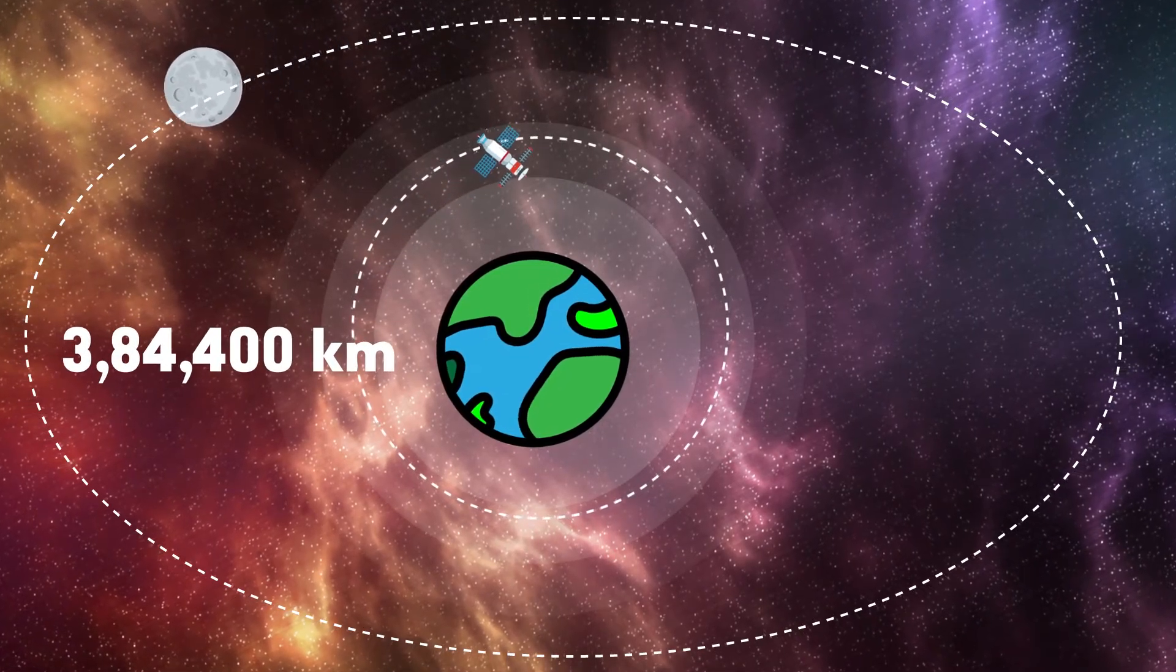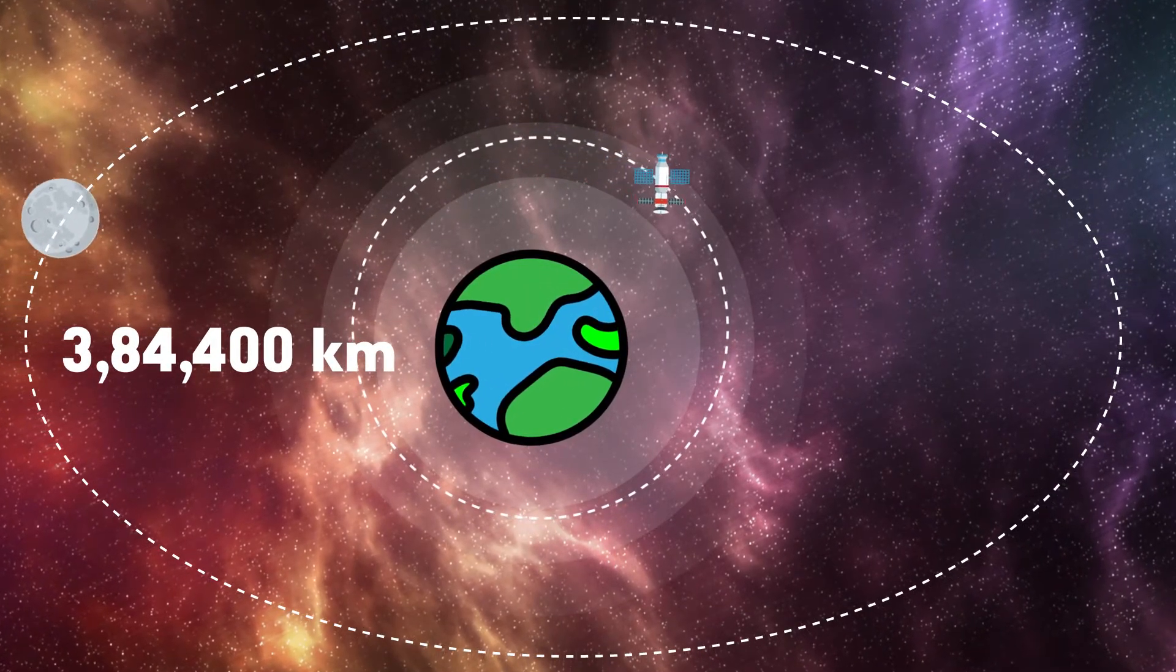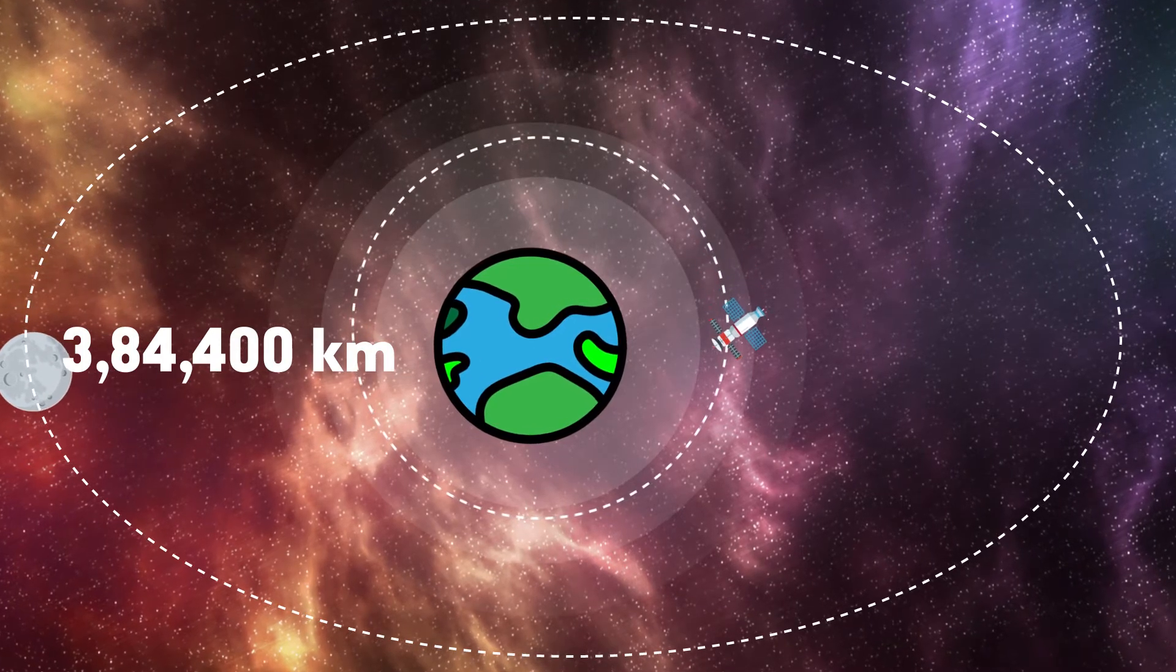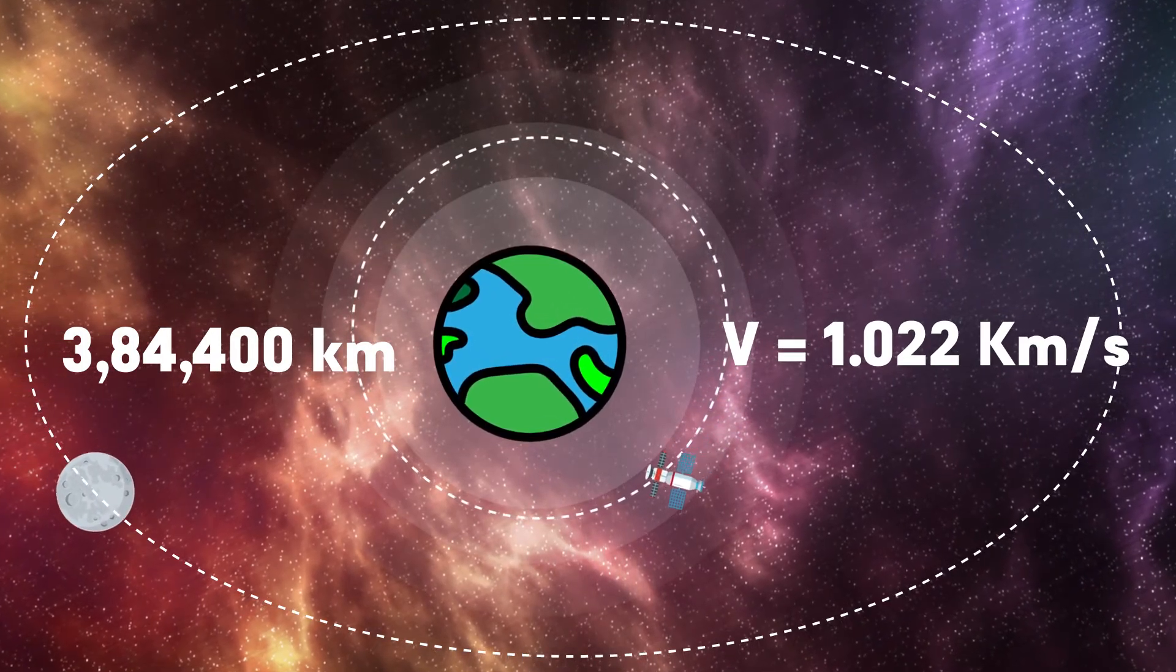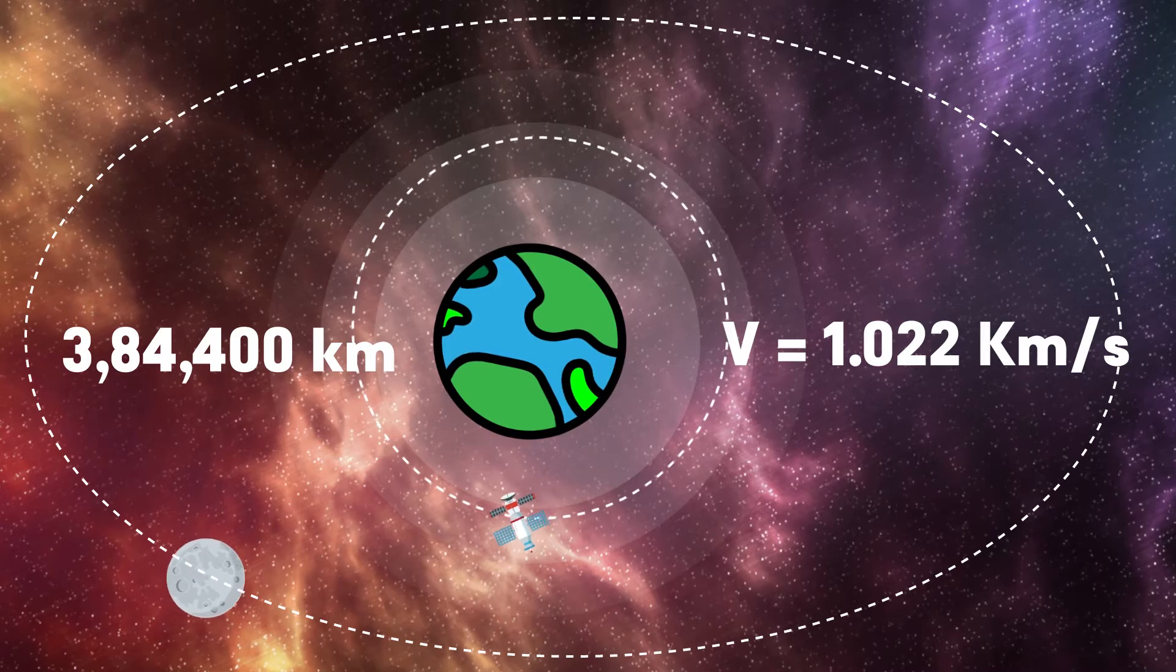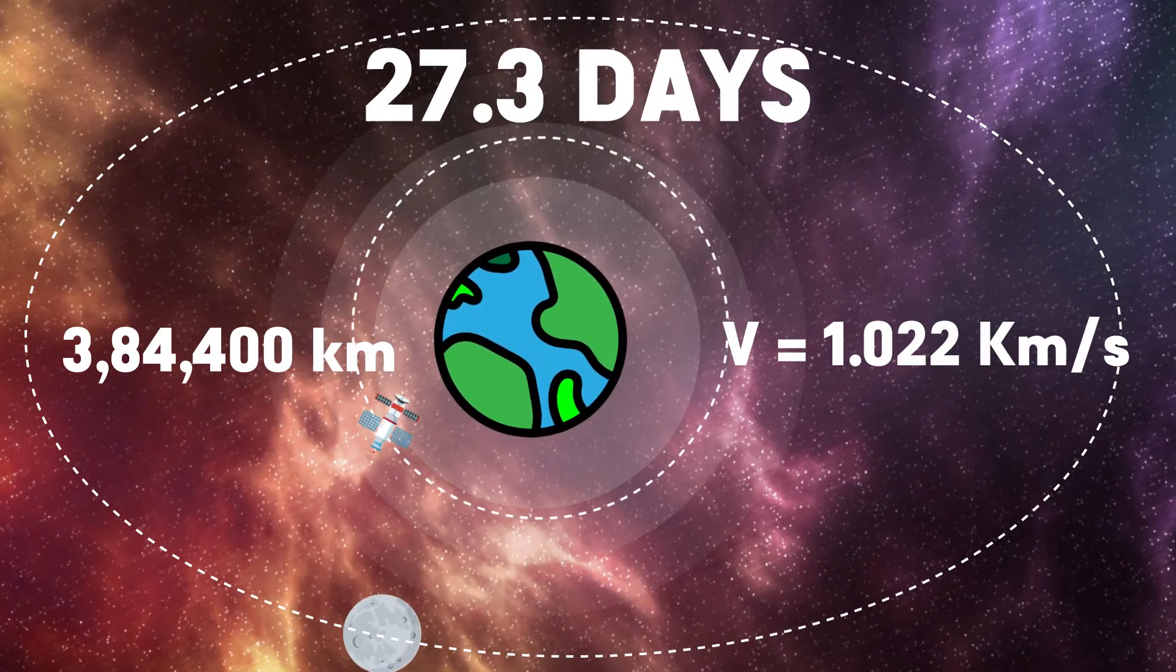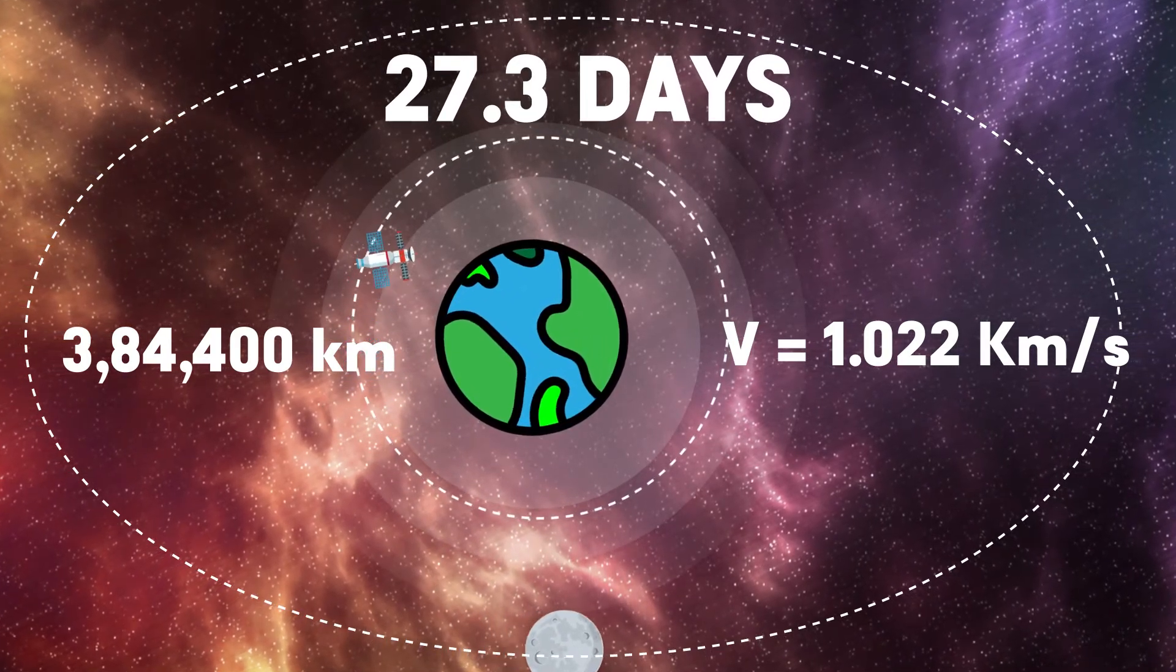The Moon is about 384,000 km away from the Earth and thus its speed is only 1.022 km per second. And it takes about 27 days to revolve around the Earth.